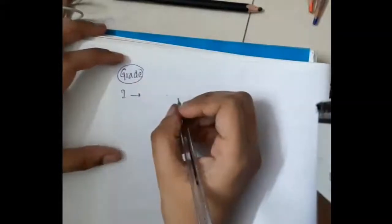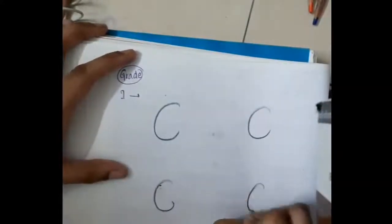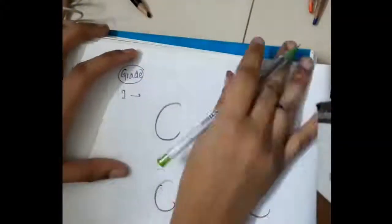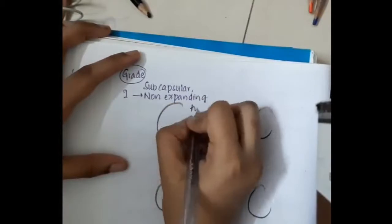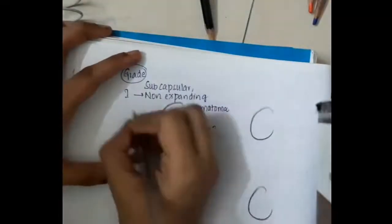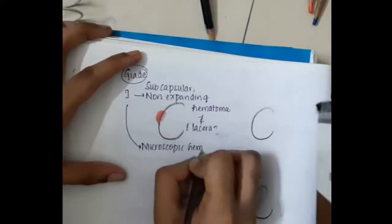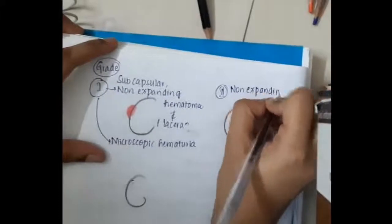Now grades of renal injury are important. In grade 1, these are the kidneys which I draw. First in grade 1, there is subcapsular non-expanding hematoma without laceration. If there is subcapsular non-expanding hematoma without laceration, you see presence of microscopic hematuria.